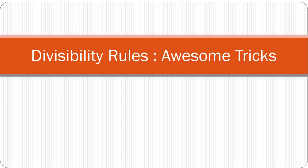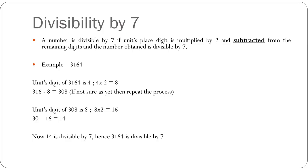So let's begin. The first rule is for divisibility by 7. A number is divisible by 7 if its units place digit is multiplied by 2 and subtracted from the remaining digits, and the number obtained is divisible by 7.